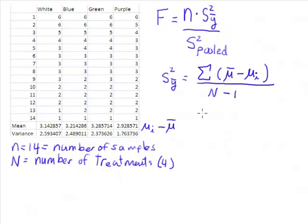And then the next thing we need to do is something called this S-squared pooled, which is really the average of the standard deviations.